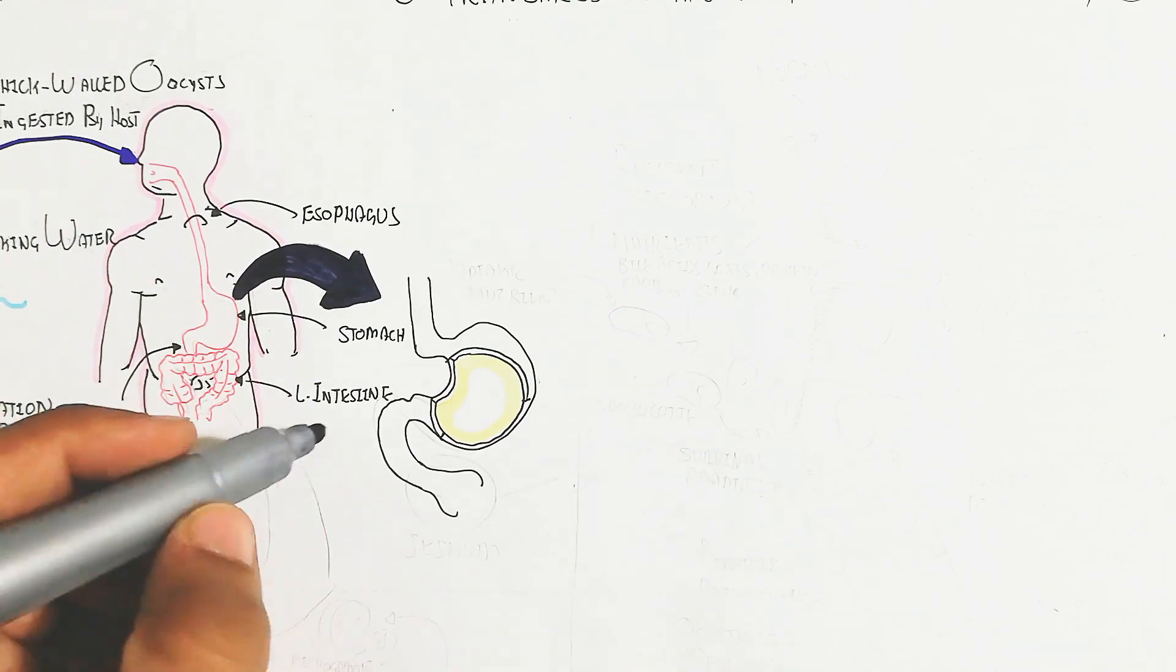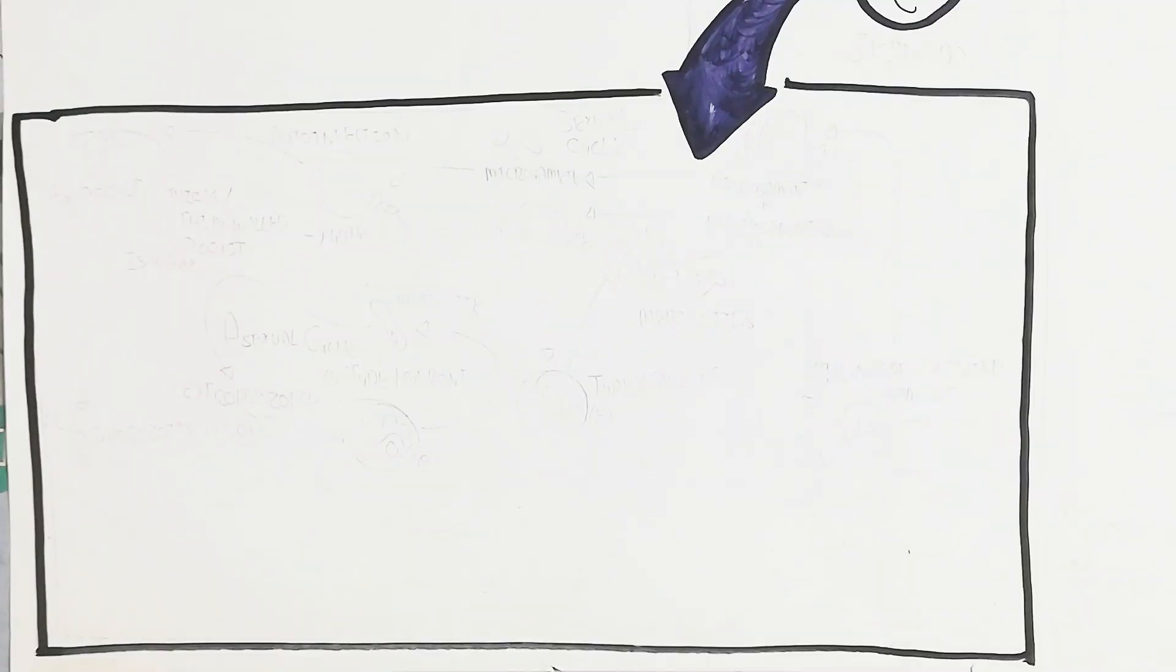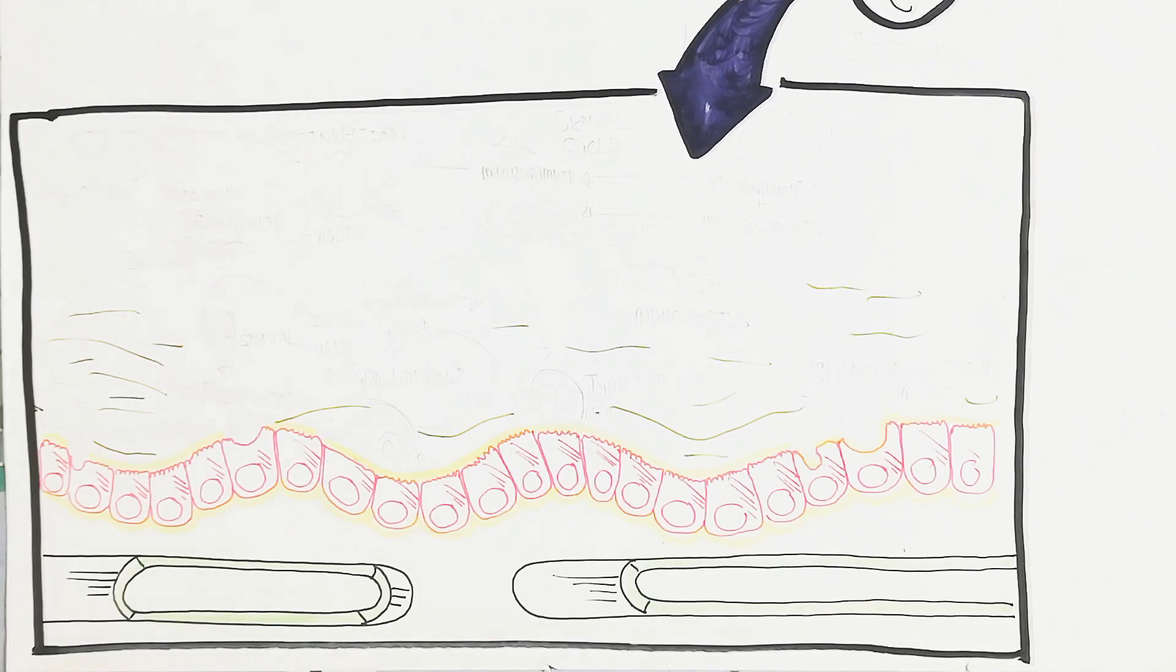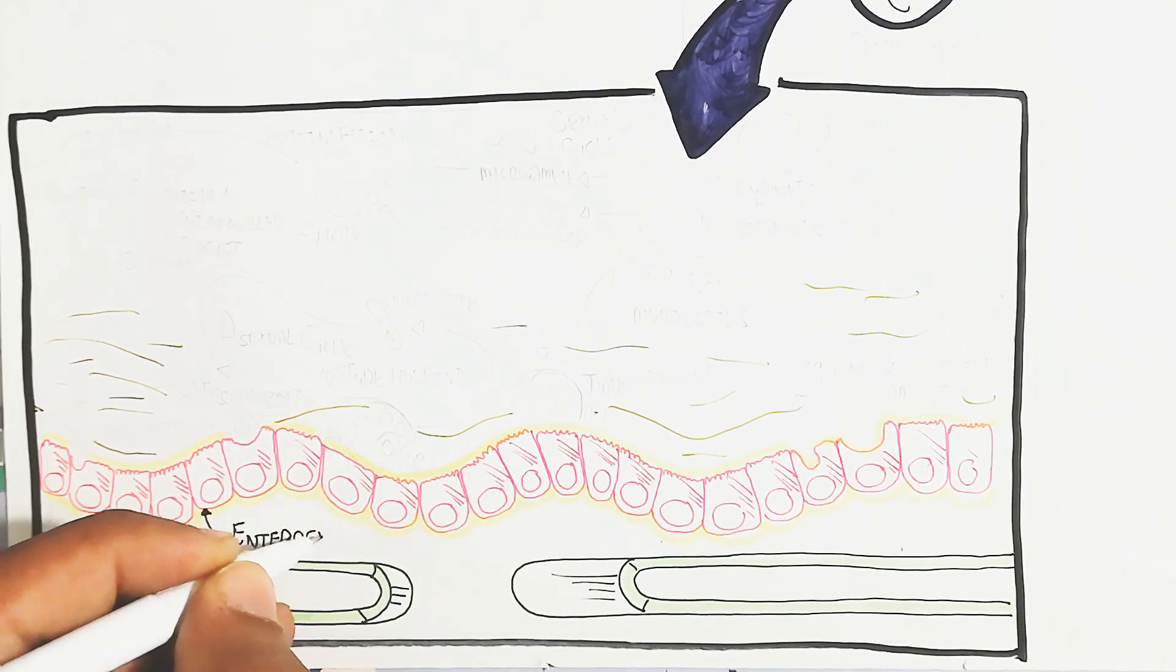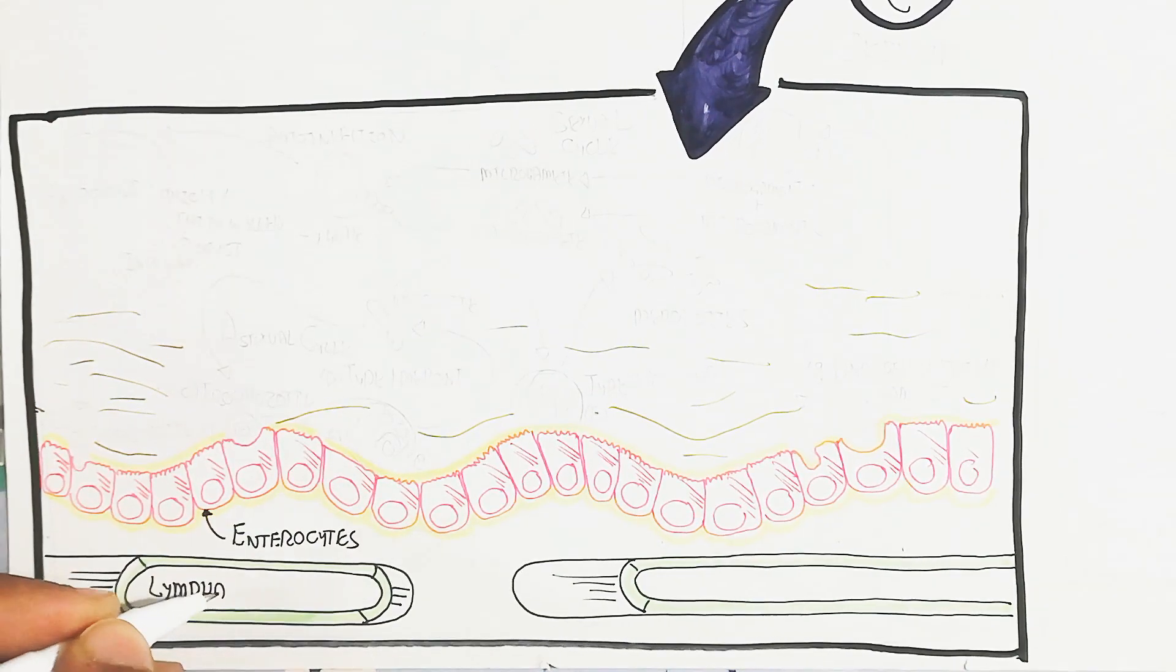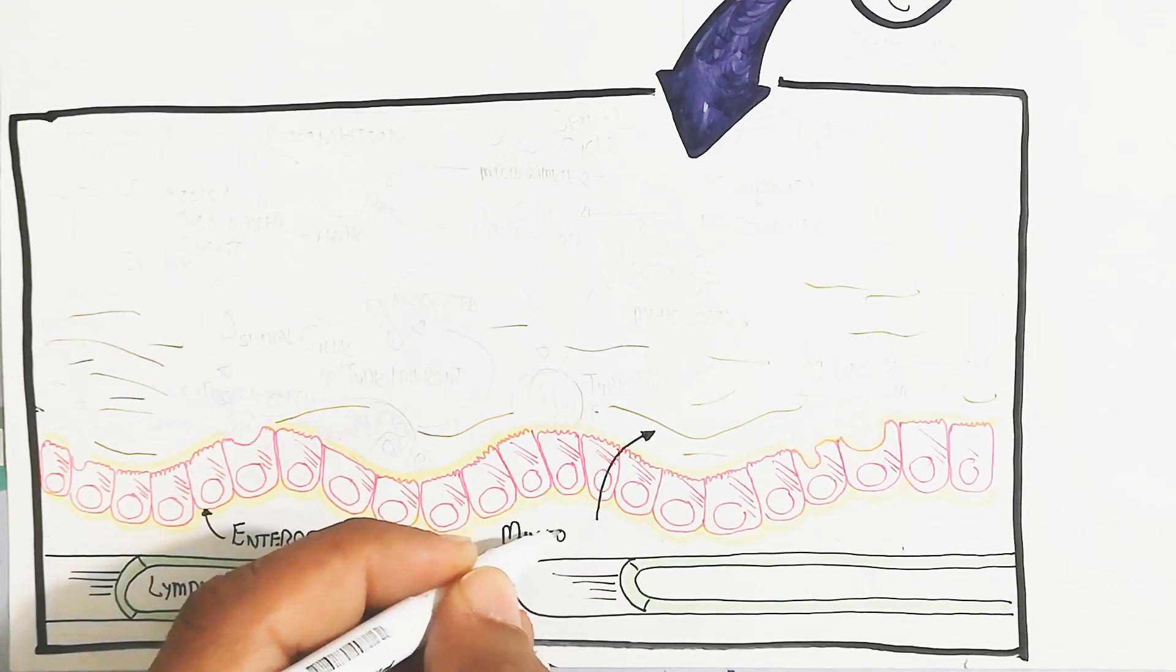Let's begin to understand their cycle, how it progresses in the lumen of the small intestine. This is the lymphatic system, the lacteal and the enterocytes. The brush-border cells contain brush-border enzymes used for digestion of food.